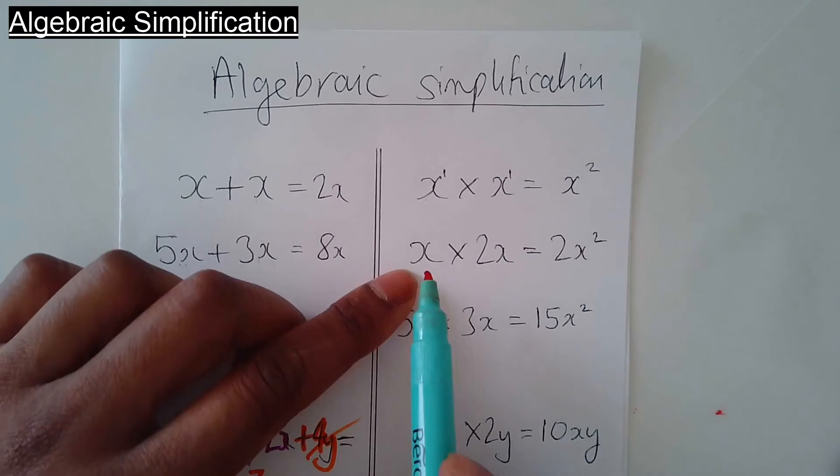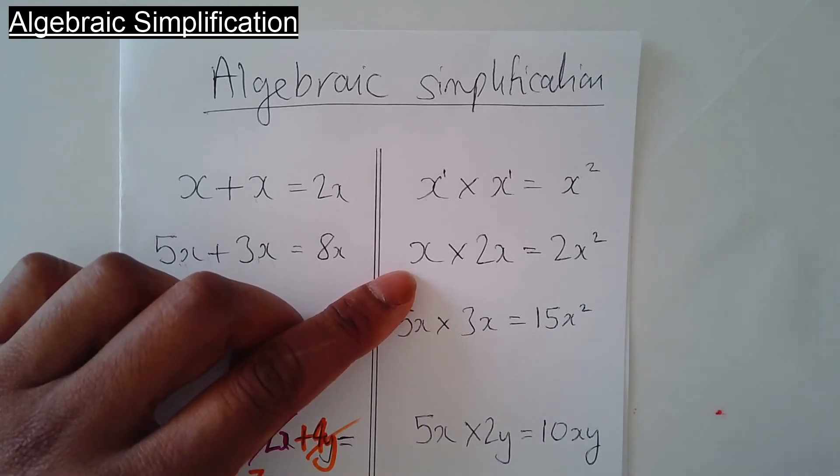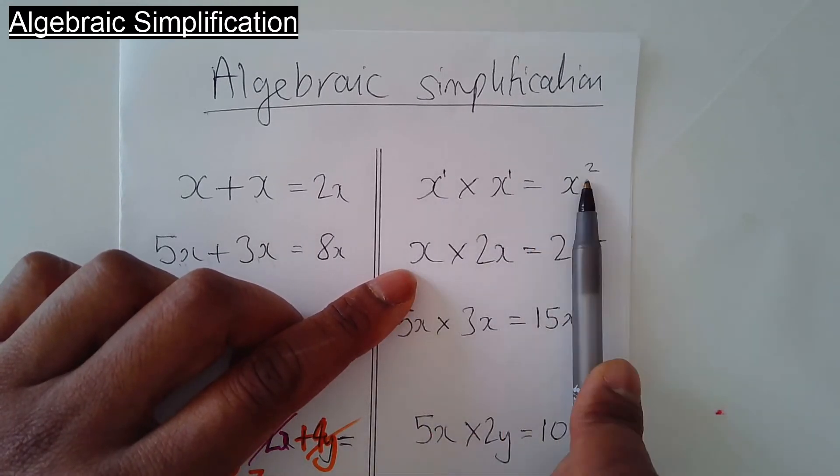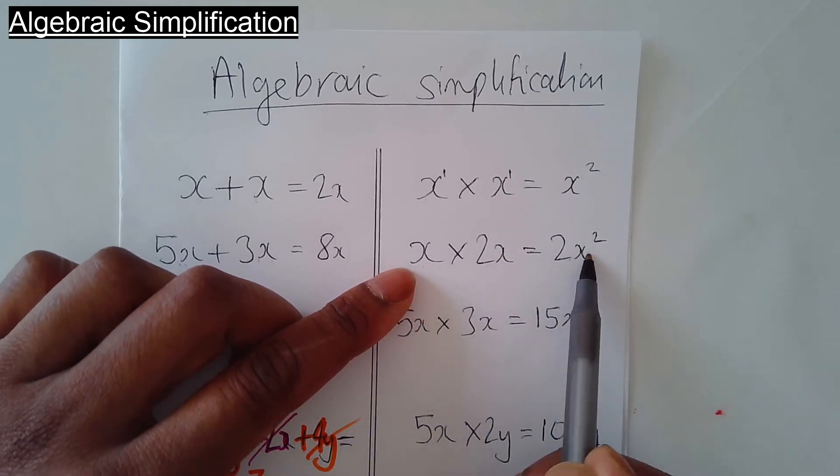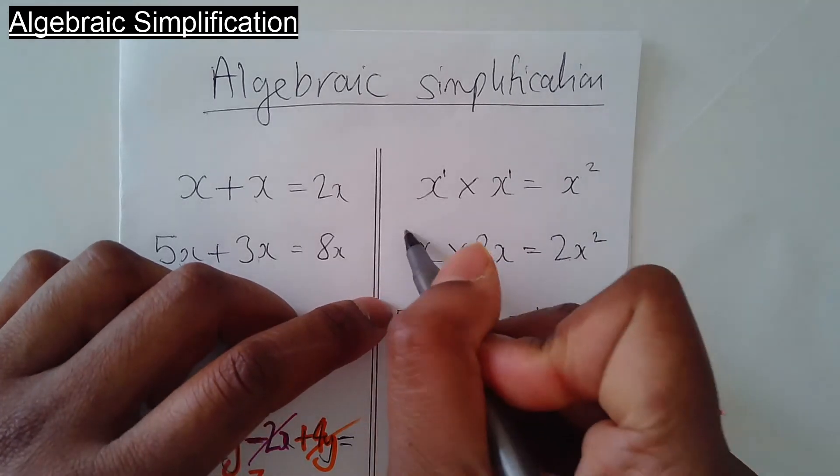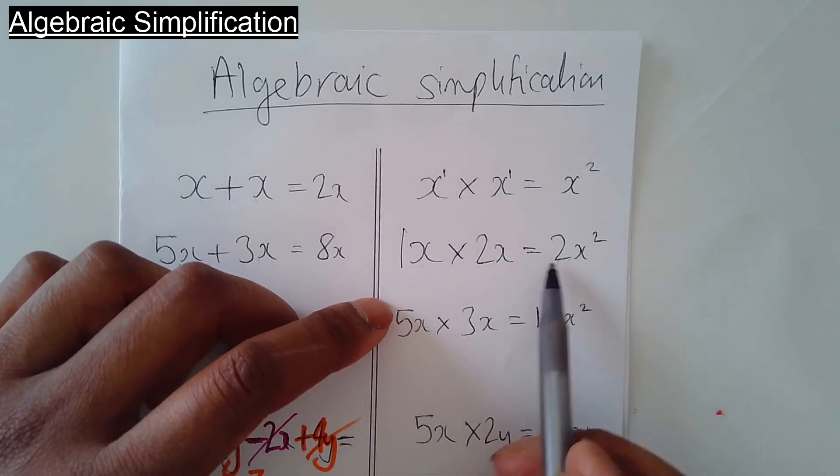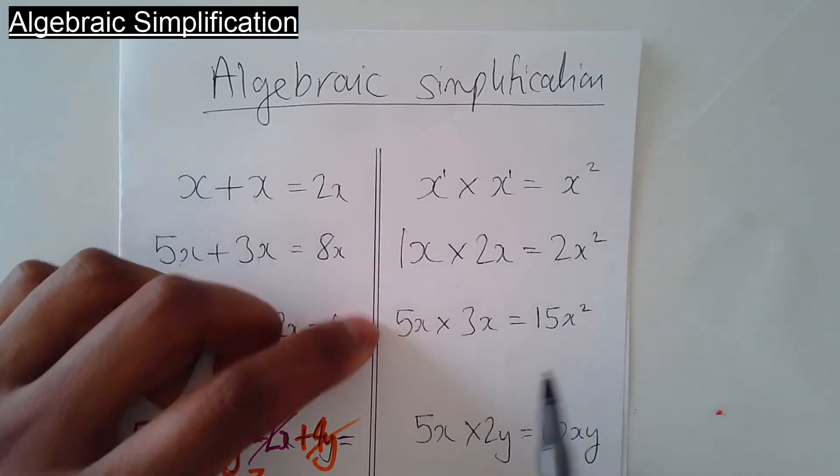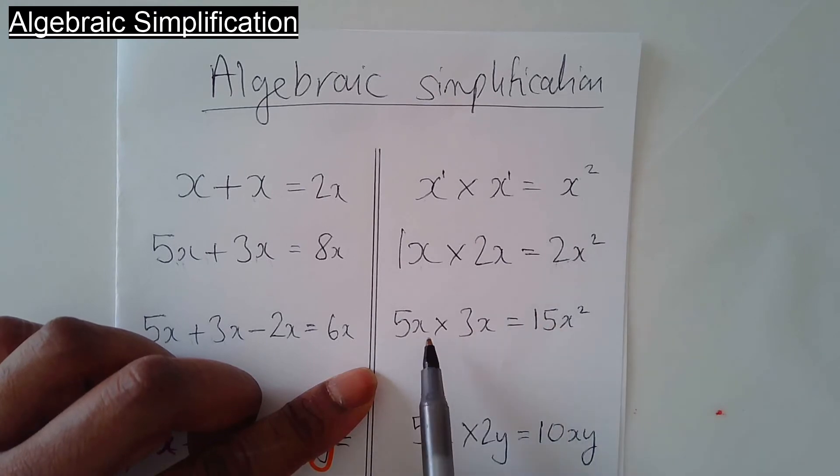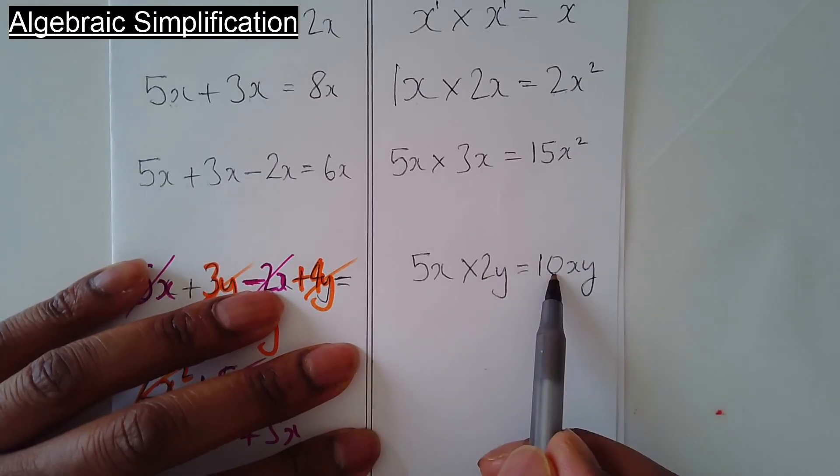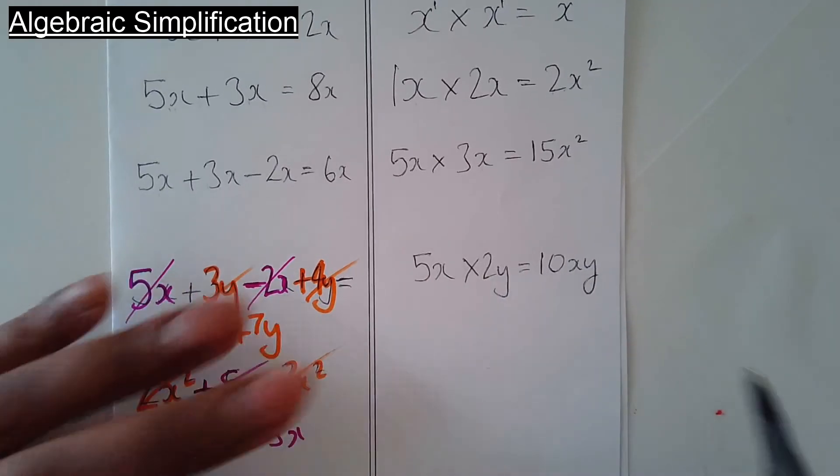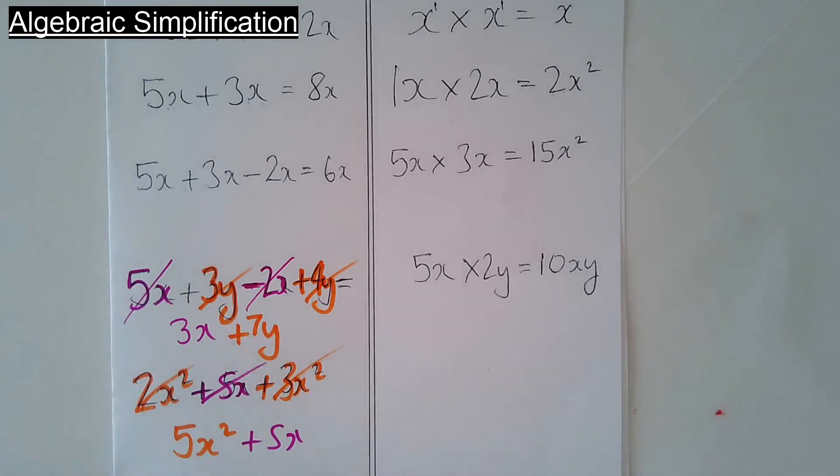To the timesing now. Quite simply, as I said to you, x times x is x squared. Look at the letters here: x times x is x squared. Then 1 times 2 is 2. You don't need to put the one there. Look, 5 times 3 is 15, x times x is x squared. Again, 5 times 2 is 10, x times y is xy. Simple as that.